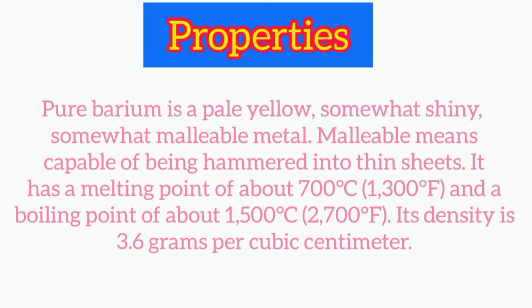Now let's see its properties. Pure barium is a pale yellow, somewhat shiny, somewhat malleable metal. Malleable means capable of being hammered into thin sheets. It has a melting point of about 700 degrees Celsius and a boiling point of about 1500 degrees Celsius. Its density is 3.6 grams per cubic centimeter.